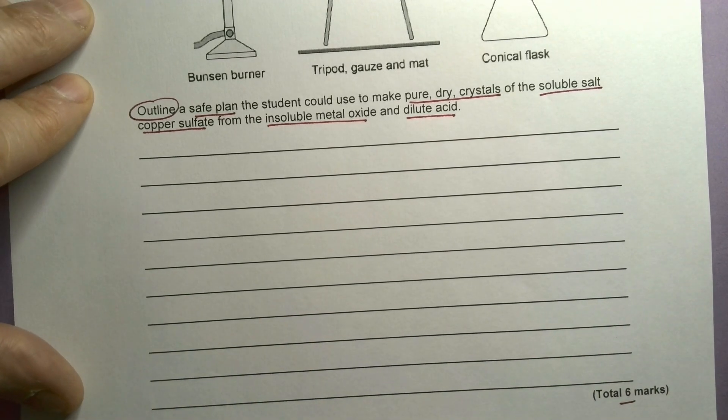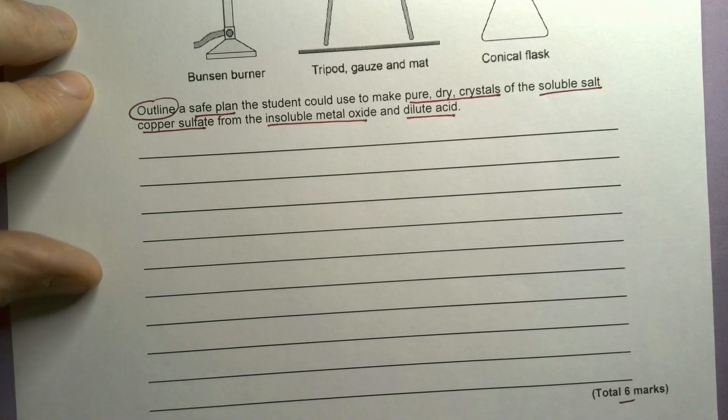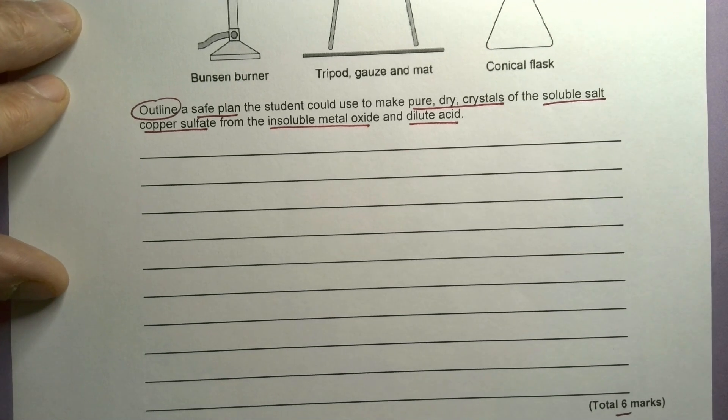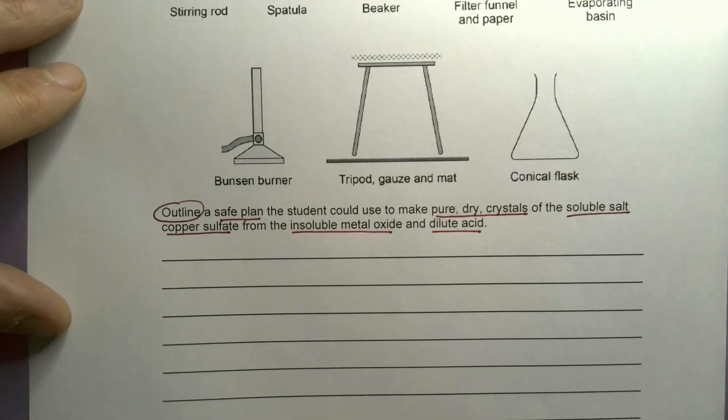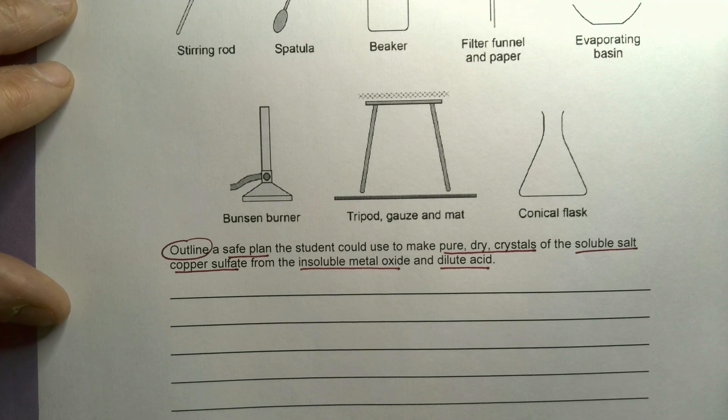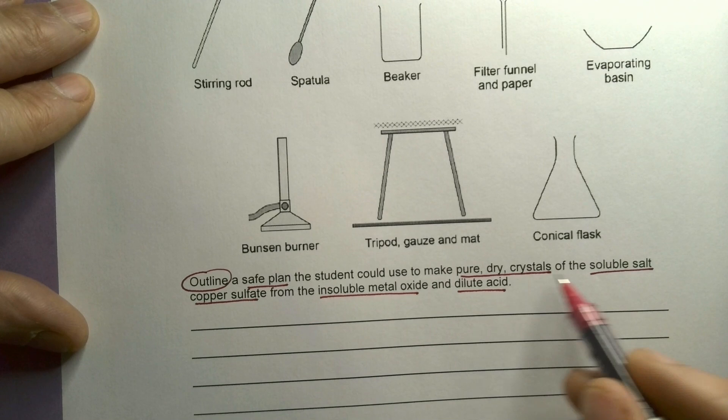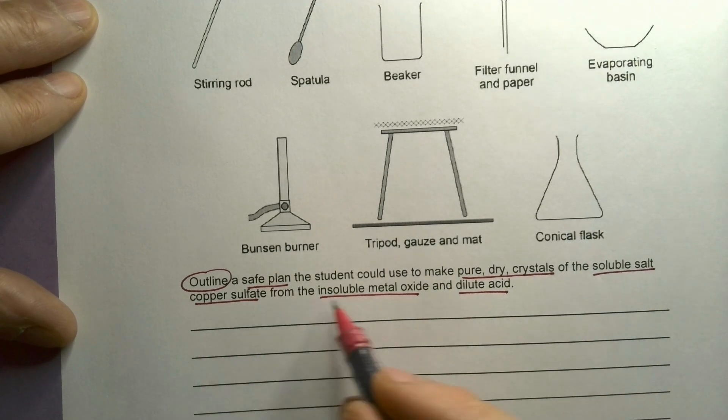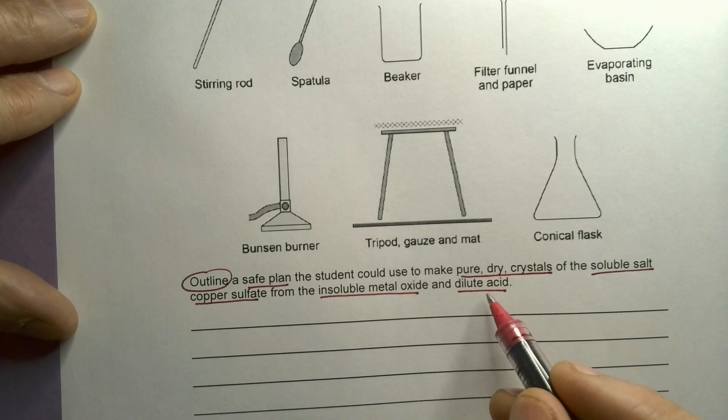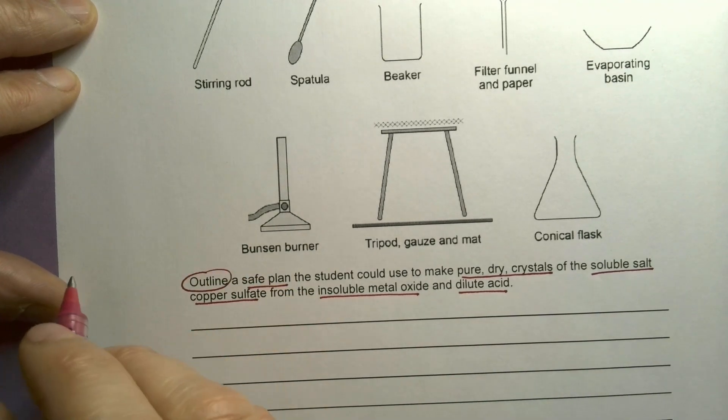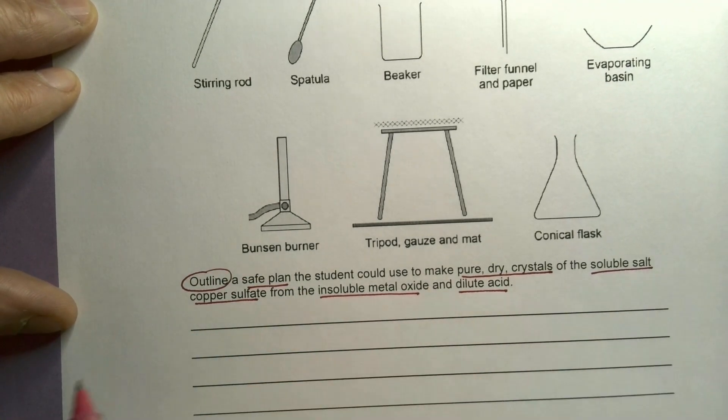There isn't much space to write this answer. No, you'd get much more space in the real exam. So let's see how we get on here with this very limited space. So the first thing before I start writing an answer, I'm just going to plan it out. What do I know? Well, I know I need to make copper sulphate. I've got metal oxide and dilute acid. So I'm going to need to know what that metal oxide is.